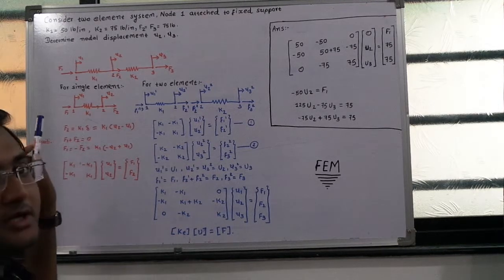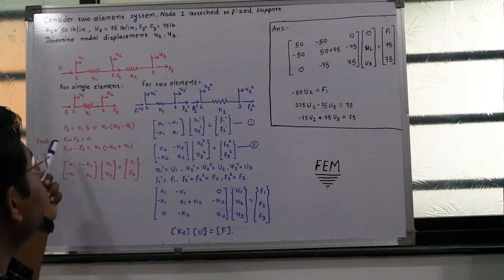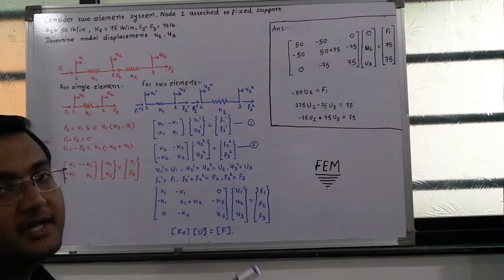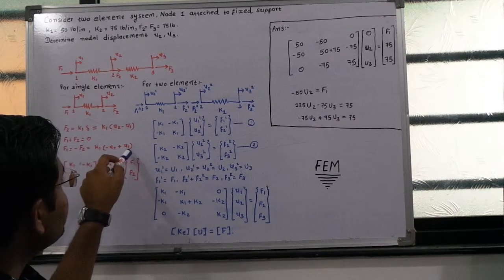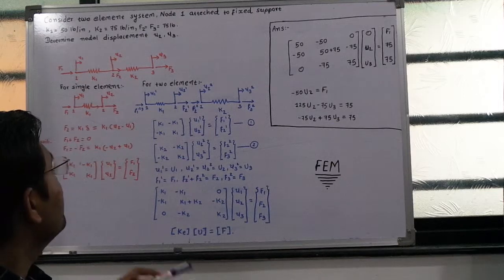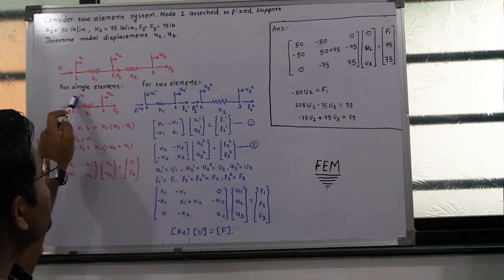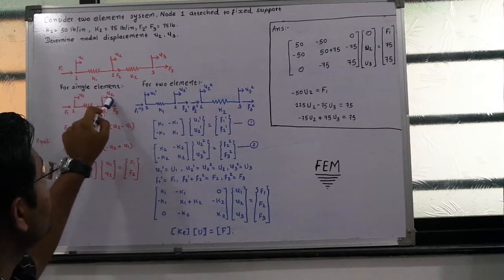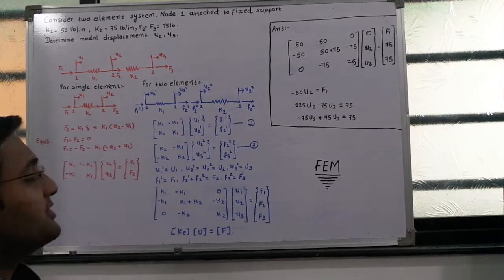For the equilibrium condition, the horizontal force sum equals zero and the vertical force sum equals zero. Since two horizontal forces act on this element, F1 plus F2 equals zero, giving F1 equals minus F2, which equals K1 times (U1 minus U2). We take U1 minus U2 when considering force F1, and U2 minus U1 when considering force F2 — the deflection of the reference node minus the deflection of the other node in each case.